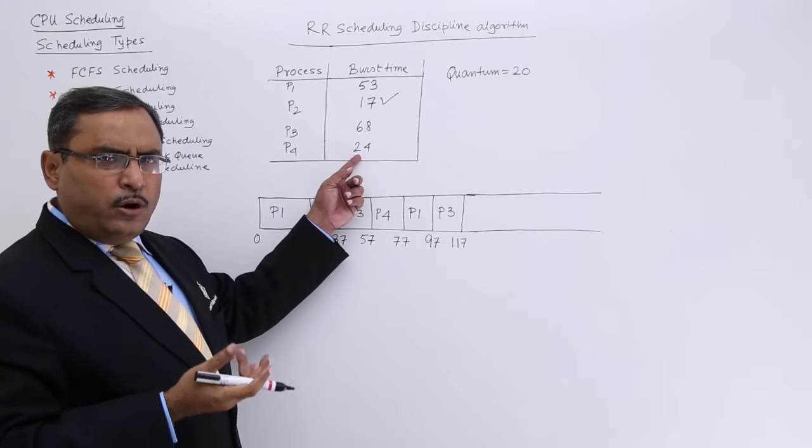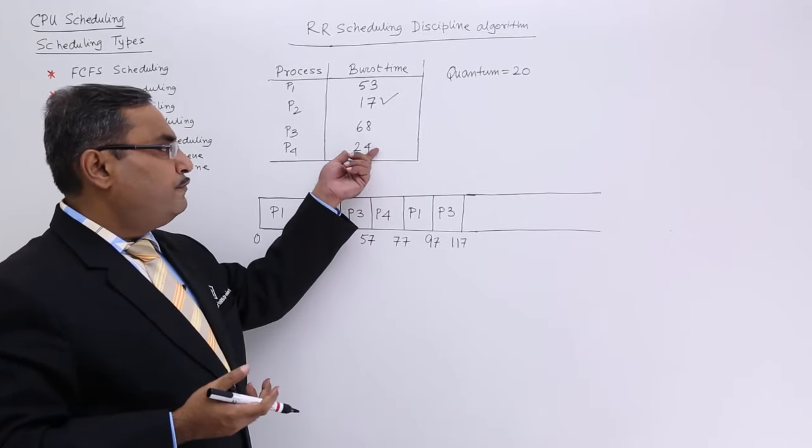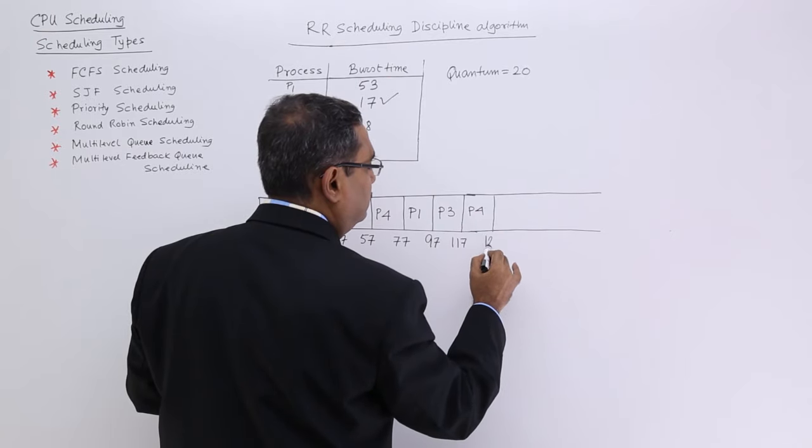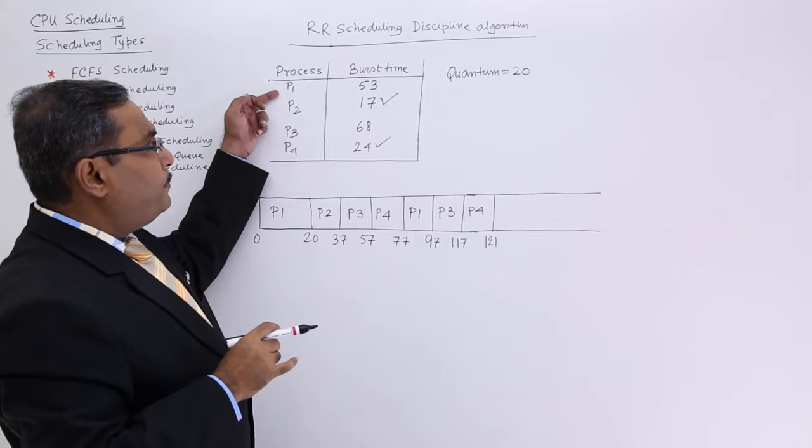Now P4. In case of P4, 20 was given. So now only 4 is pending. So P4 will be executing for 4 units of time. So P4 got completion. So now for P3.